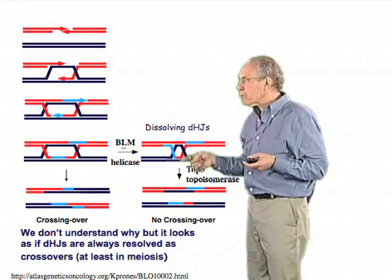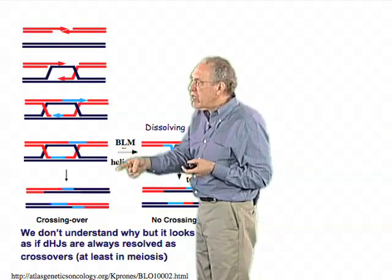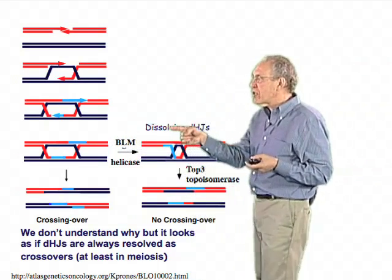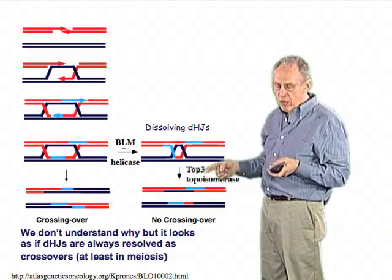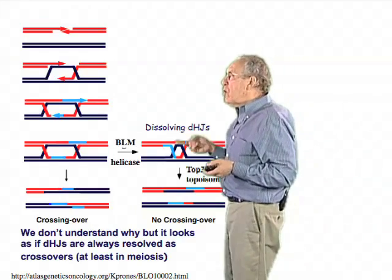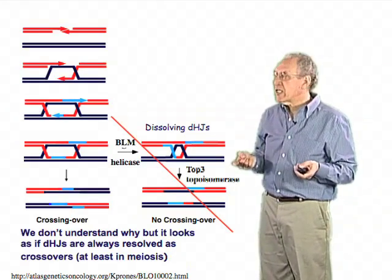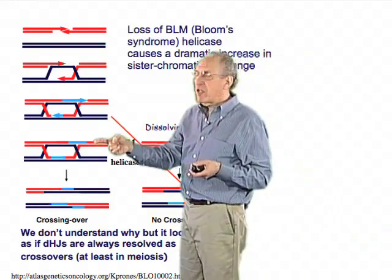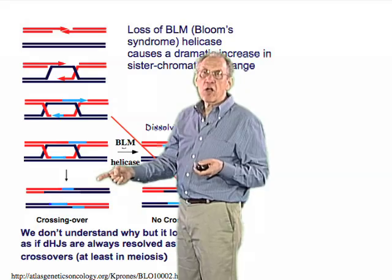So we have two processes: the crossover-generating process which comes from the double Holliday junctions, and an antagonistic process which removes the double Holliday junctions and assures that many of the molecules will be present in non-crossover form. In the absence of Bloom's helicase, when dissolution doesn't occur, everything is kept in this configuration, and the prediction is that there should be many more crossovers arising.